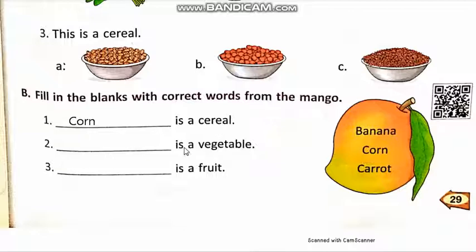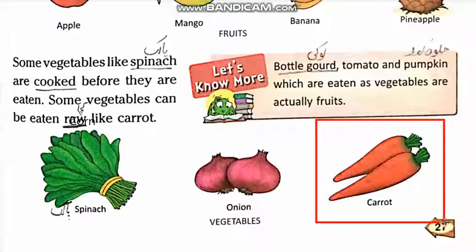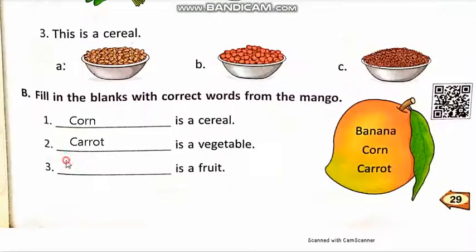Number two: Dash is a vegetable. The correct answer is carrot. Here are some examples of vegetables: Spinach, onion, and carrot. Carrot is a vegetable.